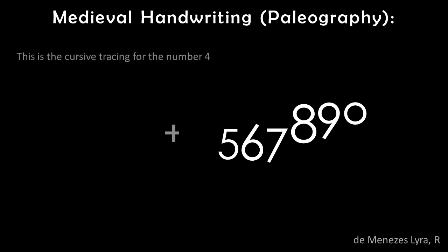This is the way the fourth digit is written, with four angles in the shape of a cross. This is the cursive tracing for the number 4. Here you see the distinction between the format of a cross and the figure formed with the addition of another line, which can be slanted or vertical.